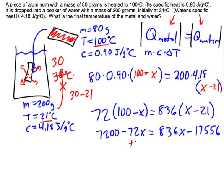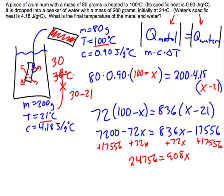I'm going to get like terms on each side. I'm going to add 72x to both sides, so 836 plus 72, on this side I'm going to get 908x. I'm also going to add 17,556, so 7200 plus 17,556, I get 24,756 equals 908x. So I'll solve that for x, I'll divide on each side, and I get that x equals 27.26 degrees Celsius.